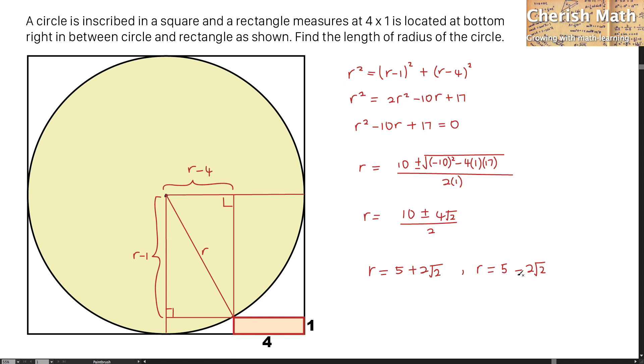Now for the value of r which equals 5 minus 2 times square root of 2, this is not the acceptable answer. Simply because when it is substituted over here, it is going to produce a value in negative. So the only answer which is acceptable is the one in the circle.